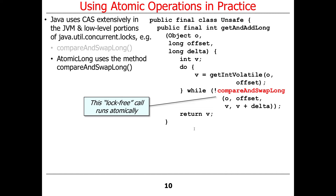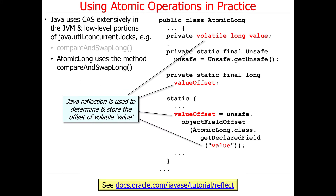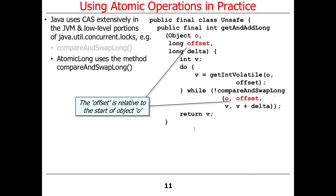Here we have compareAndSwapLong — this is the lock-free call that runs atomically. As you can see, it's going to take the object, the offset, the expected value, and the updated value. The offset is relative to the start of the object. So assuming we're using AtomicLong, the object will be an instance of AtomicLong, and the offset will be the value offset of the value field — let's say, for sake of argument, it's 4. So we're passing in the address of the AtomicLong and the offset from that object in memory where we want the compare-and-swap comparison to be made. This is really low-level C/assembly code kind of stuff.